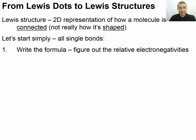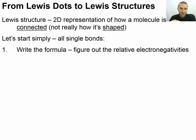The first step is to write down the formula, because we don't know what we're working with until we have it in front of us. Once we know the formula, I can look up the relative electronegativities — either the real values or just by looking at a periodic table.